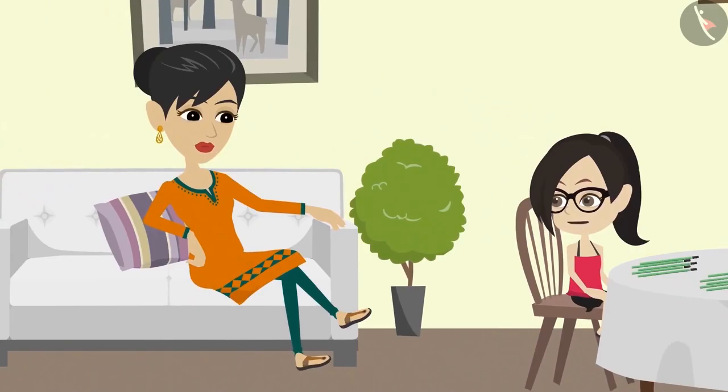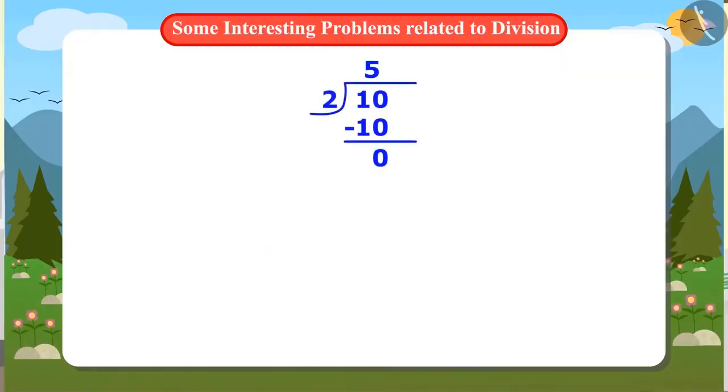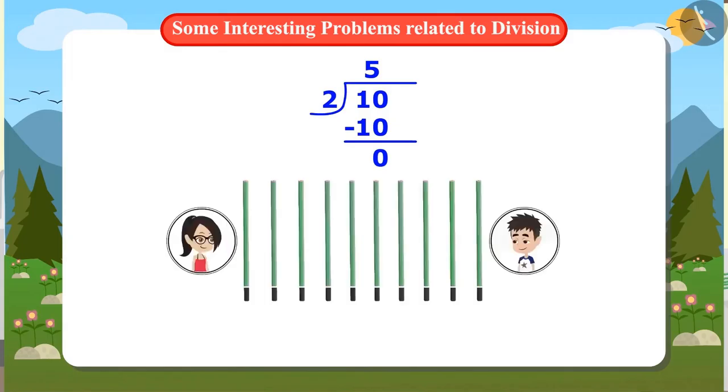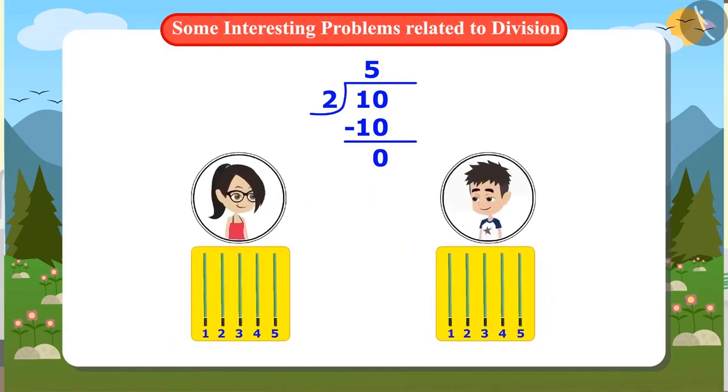Mummy, the answer was five when I divided ten by two. Vandana, when ten is divided by two, if the answer is five, it means that dividing ten pencils into two parts will bring five pencils in each part.